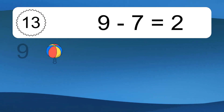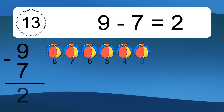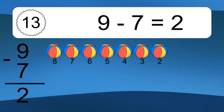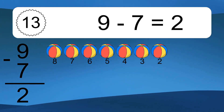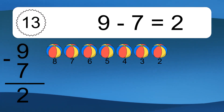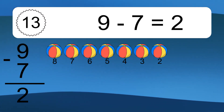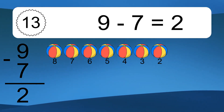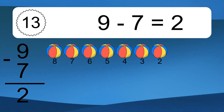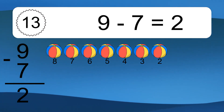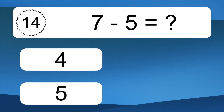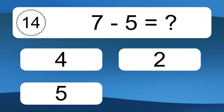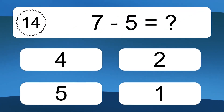9 minus 7 equals 2. Let's count it: 8, 7, 6, 5, 4, 3, 2. 7 minus 5 equals what?